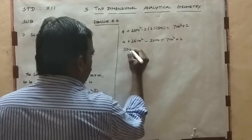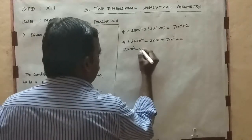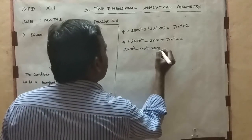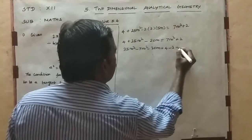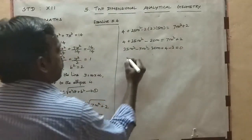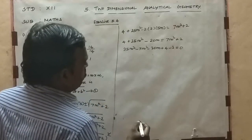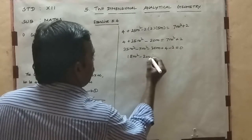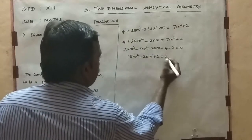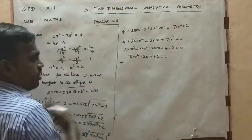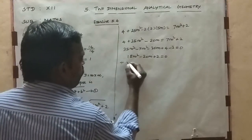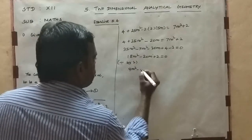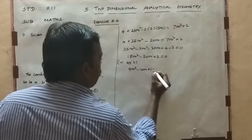Now 25m² − 7m² = 18m², after minus 20m, and 4 − 2 = 2, so 18m² − 20m + 2 = 0. Both terms have a common factor of 2, so divide both sides by 2: 9m² − 10m + 1 = 0.